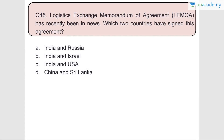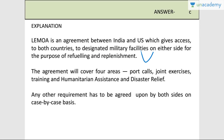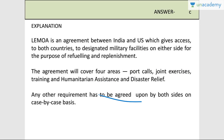Question number forty-five: The Logistics Exchange Memorandum of Agreement - LEMOA - has recently been in news. Which two countries have signed this agreement? It is signed between India and the USA. LEMOA gives access to both countries to designated military facilities on either side for the purpose of refueling and replenishment. The agreement covers four areas: port calls, joint exercises, training, and humanitarian assistance and disaster relief. Any other requirement has to be agreed upon by both sides on a case-by-case basis.